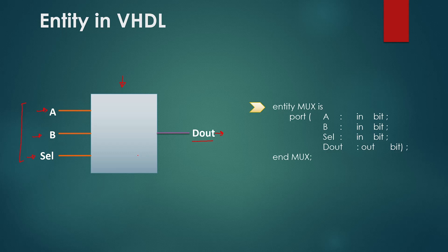In the last video we took an example of a simple multiplexer to understand the VHDL design tools and the design flow, so let's use the same example today. For this multiplexer we would have three inputs: input A, input B, and input SELECT, and we have one output that is DOUT.